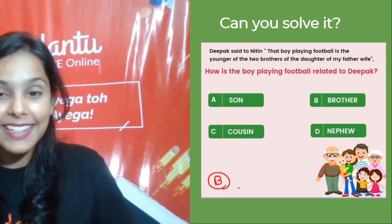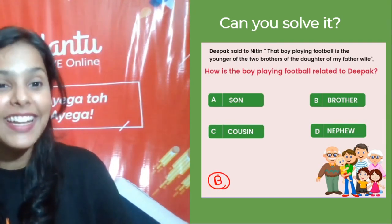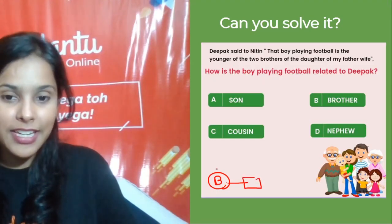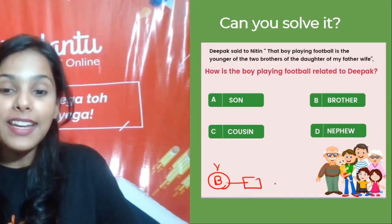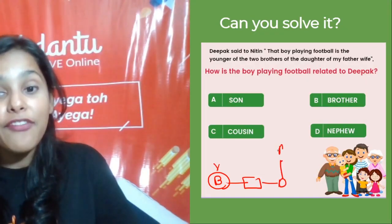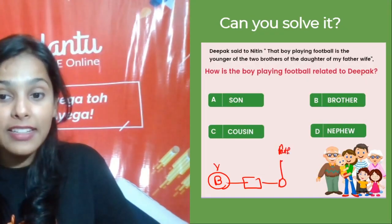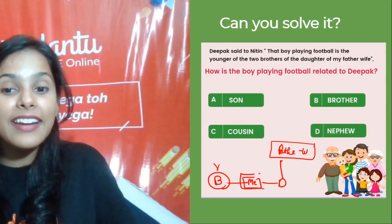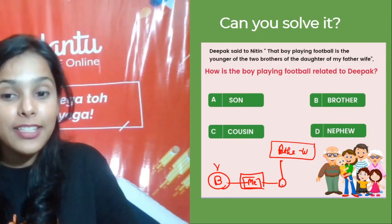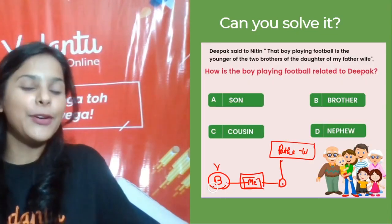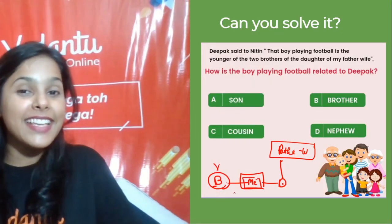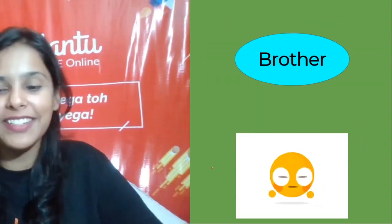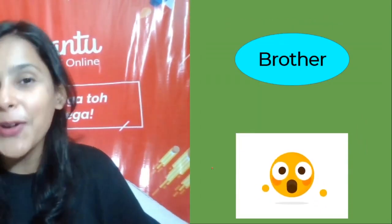The boy playing football is the younger of the two brothers. 'My father's wife' means my father and mother are husband and wife — so here it is me. My father's daughter's brother — that is my brother. The correct answer is 'brother.' Let me know if you got it right!